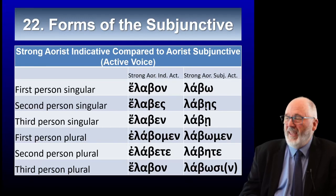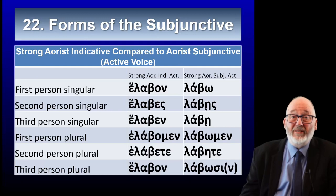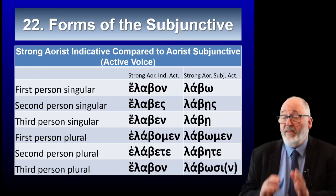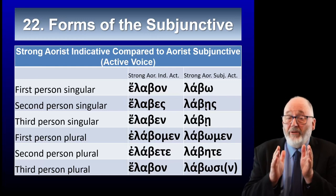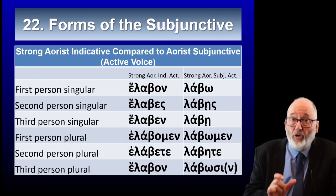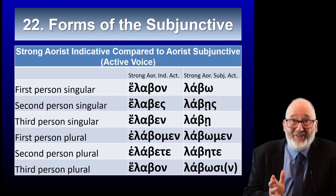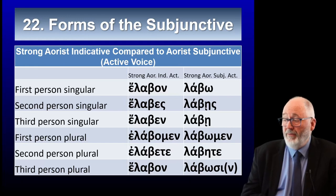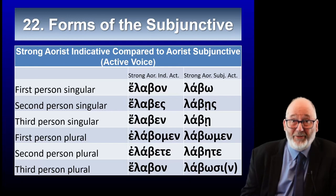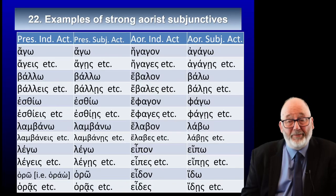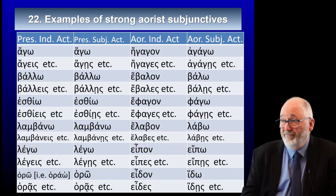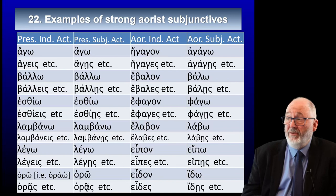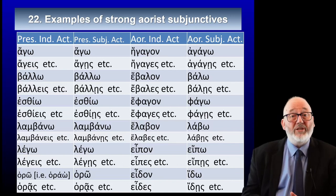What about the strong aorist? We use the strong aorist of lambanō to illustrate. In the indicative mood it's elabon, which shows us the aorist verb stem is lab. So we take the aorist verb stem lab and add — you guessed it — the endings of the present subjunctive: labō, labēs, labē, labōmen, labēte, labōsin. Once you're familiar with it, it's not so bad. Here are some examples of how these strong aorist verbs work: columns for present indicative, present subjunctive, aorist indicative, and aorist subjunctive. Once we know the aorist indicative, we can work out the aorist subjunctive.